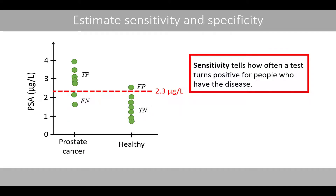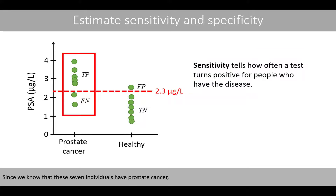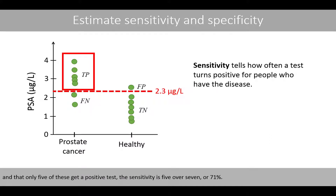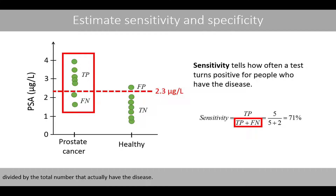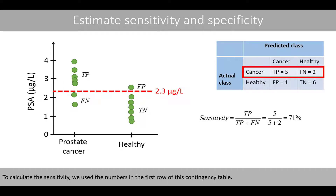Sensitivity tells how often a test turns positive for people who have the disease. Since we know that these 7 individuals have prostate cancer and only 5 of these get a positive test, the sensitivity is 5 over 7, or 71%. The sensitivity is therefore calculated as the number of true positives divided by the total number that actually have the disease. To calculate the sensitivity, we use the numbers in the first row of this contingency table.